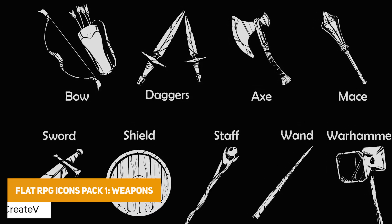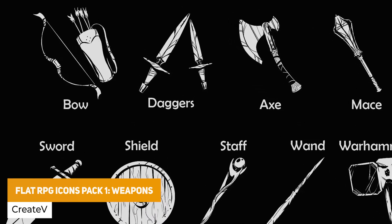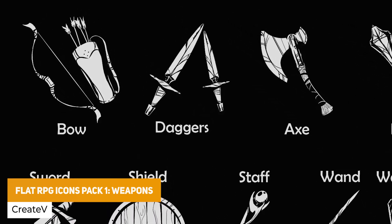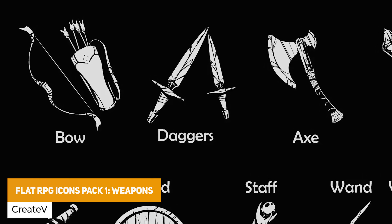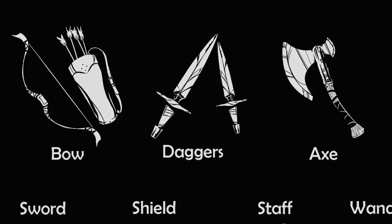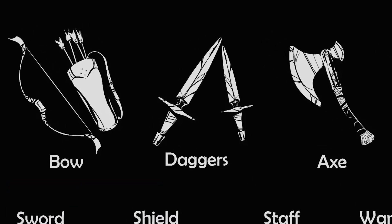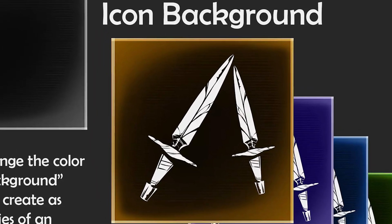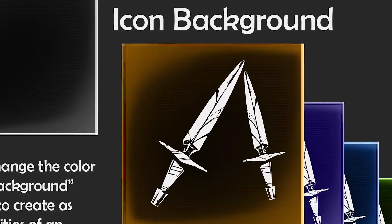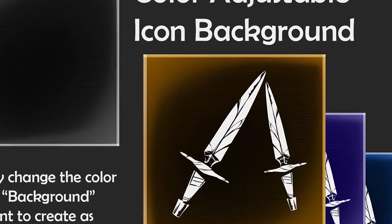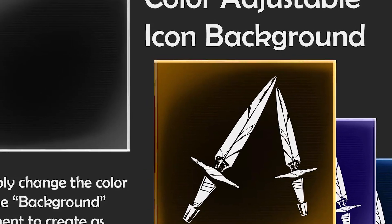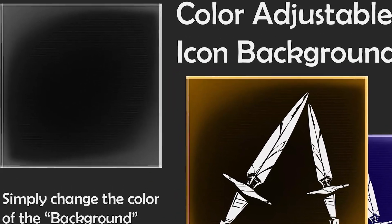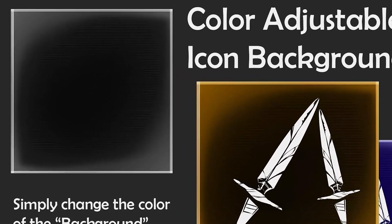The next one is Flat RPG Icons One: Weapons — a selection of fully customizable weapon icons with a background element so you can have different rarity styles: green for common, blue for rare, purple for epic and yellow for legendary, all saved as PNGs at 1600 by 1600 resolution.